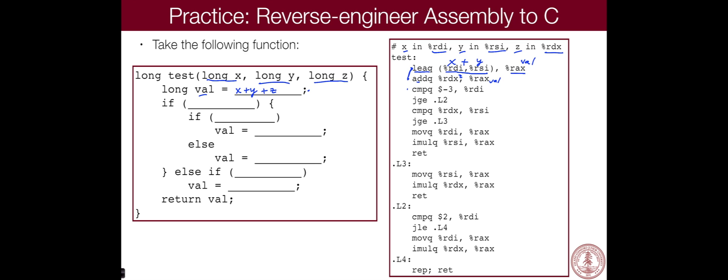All right. Let's go on to the next line. CMPQ, compare. We are comparing negative three to RDI, which we said was X.